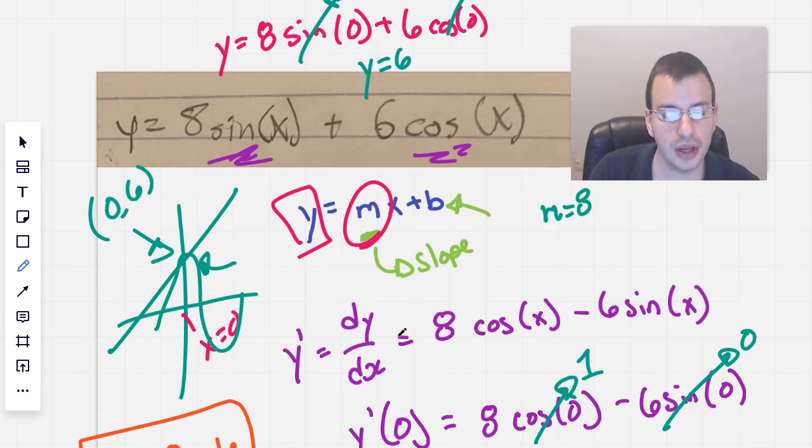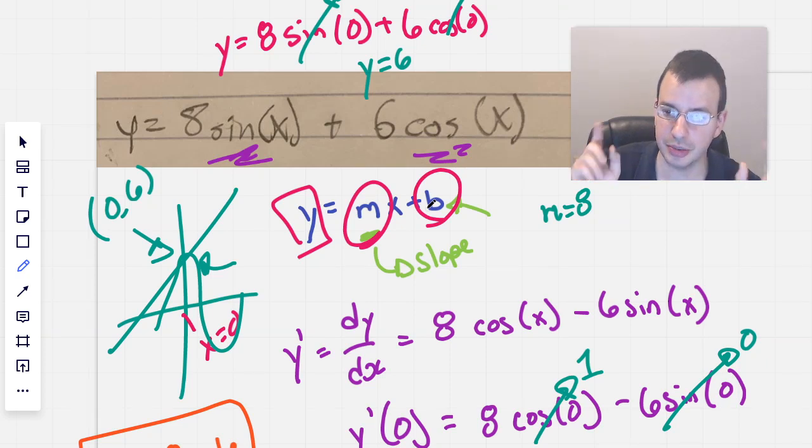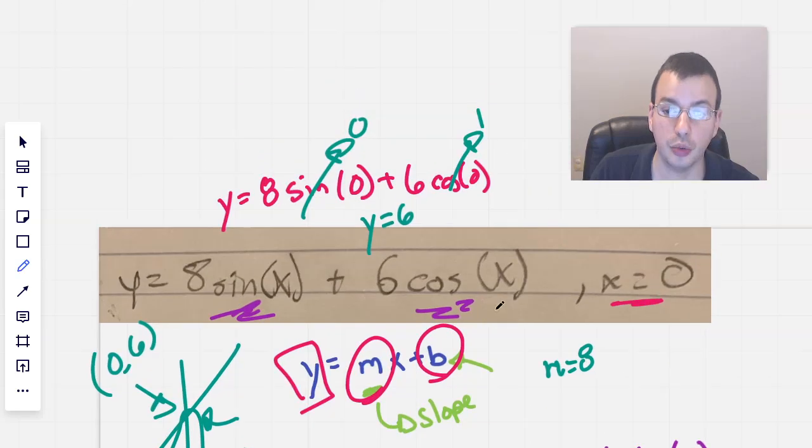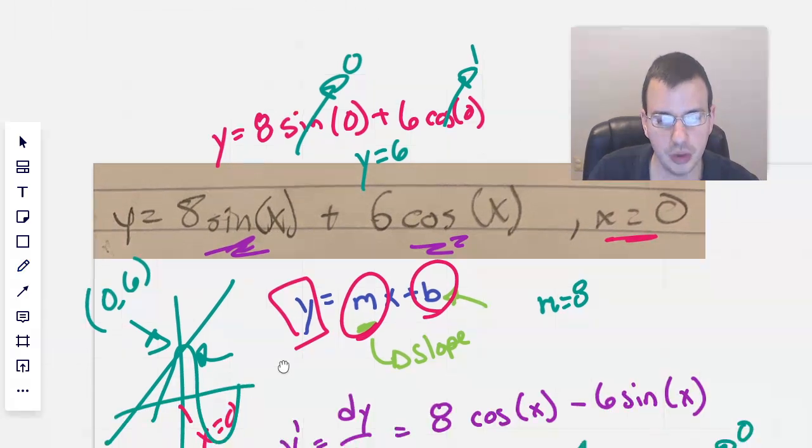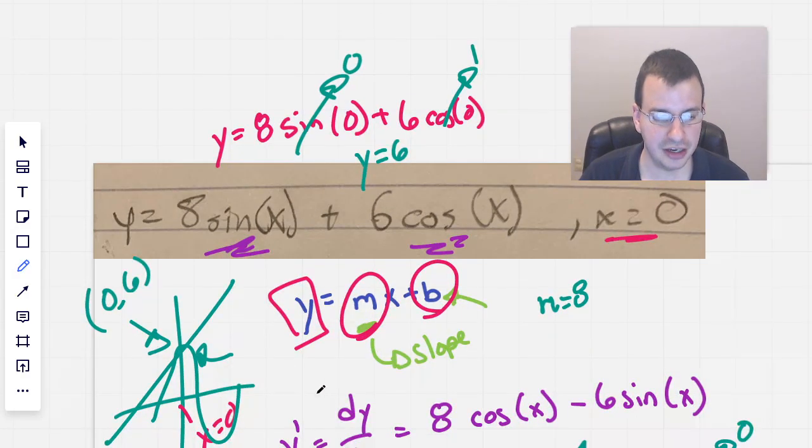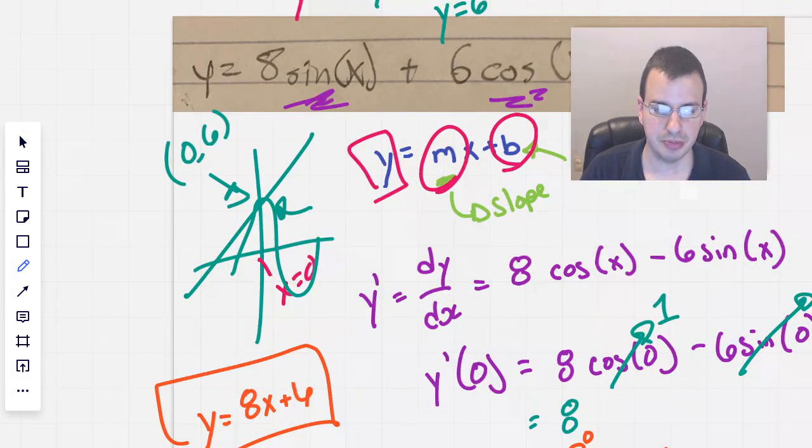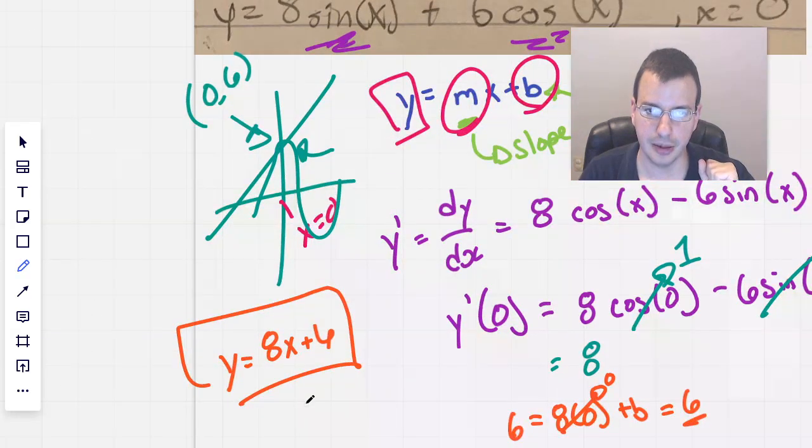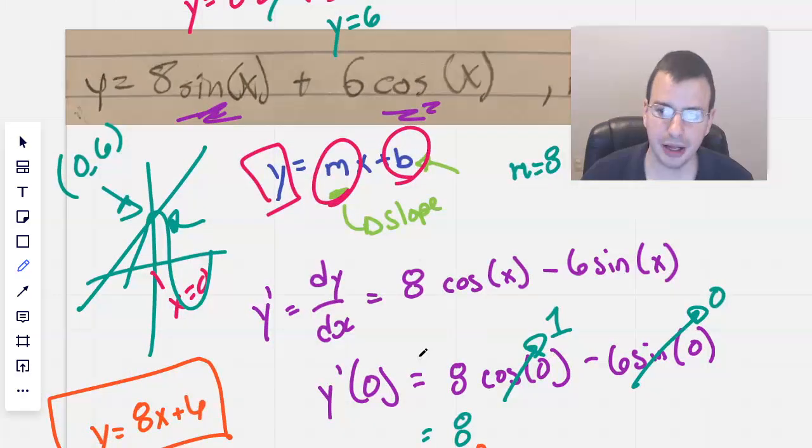We then find out b, because we know there's going to be a common point between the tangent line and the curve. And we find, we're already given one point, or one coordinate, x equals zero, and then we find the y portion of that point by plugging that zero back into our original equation. We then do some algebra, and we find the equation of the line, y equals mx plus b is y equals eight x plus six. Hope that helped. See you next time.